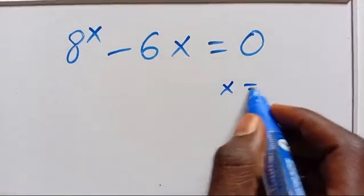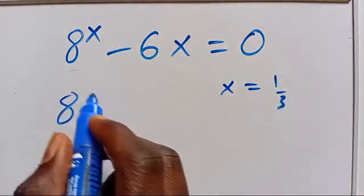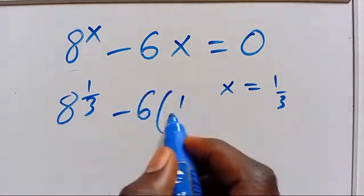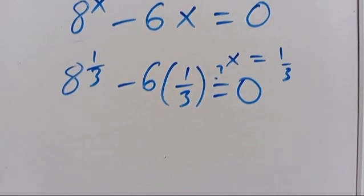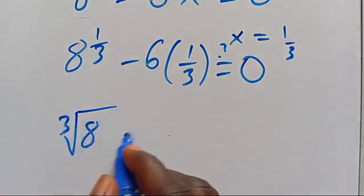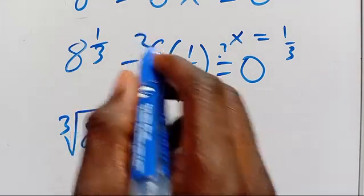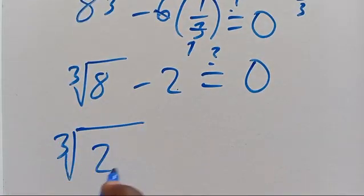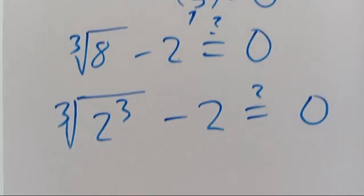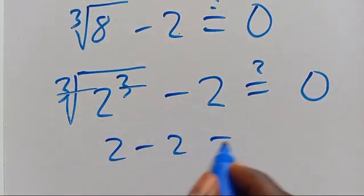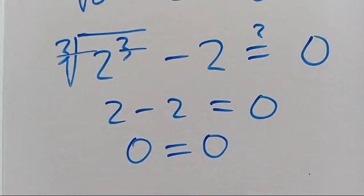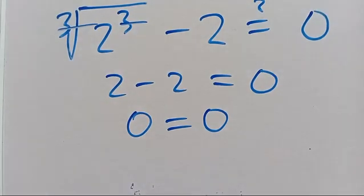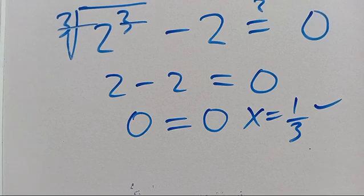Checking: when x equals 1/3, we have 8 to the power of 1/3 minus 6 times 1/3 equals 0. This gives us the cube root of 8, which is 2, minus 2, equals 0. Since the cube root of 2 cubed equals 2, and 2 minus 2 equals 0, we get 0 equals 0. This confirms that x equals 1/3 satisfies the problem.